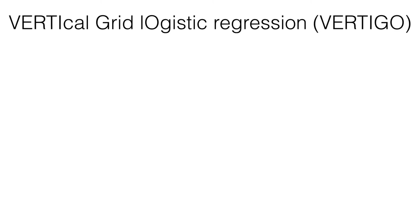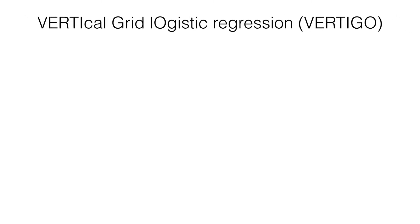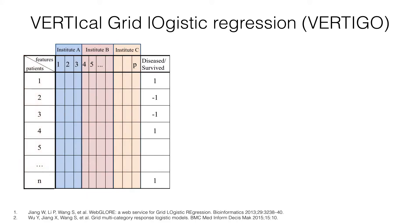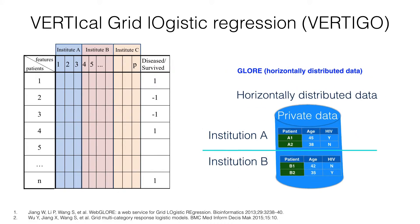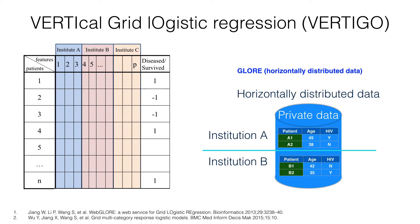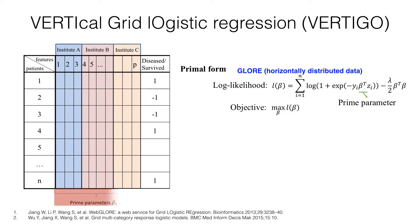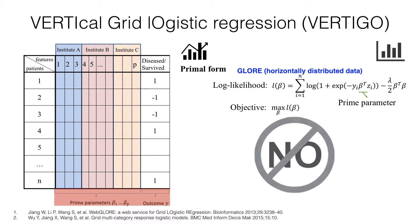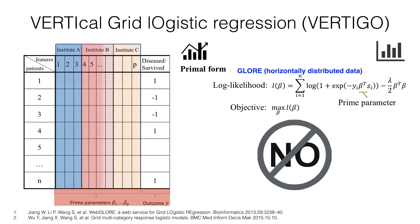Now let us introduce the Vertical Grid Logistic Regression framework. In this case, different features of the same population are distributed among different institutions, as shown in different colors. Previously, in the GLORE framework for horizontally distributed data, we solved the problem in the primal form, where only site-wise local statistics need to be exchanged. However, for the vertical case, it is infeasible to apply the same idea over the primal form due to the new data paradigm.